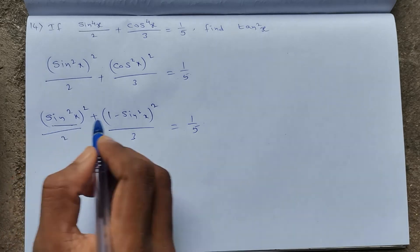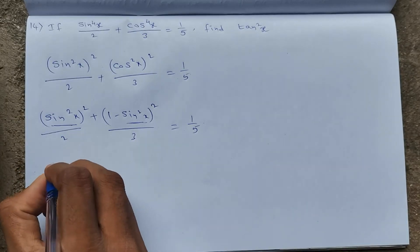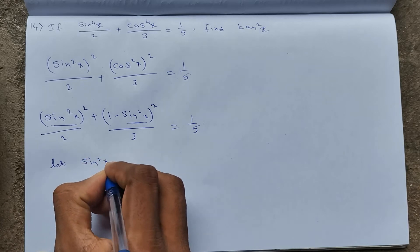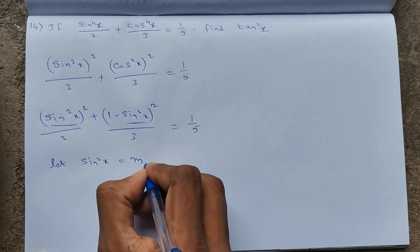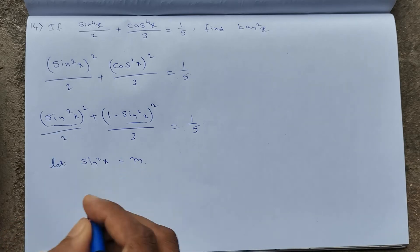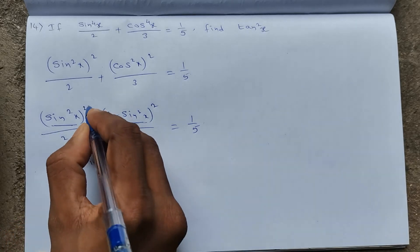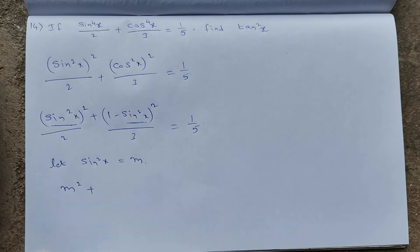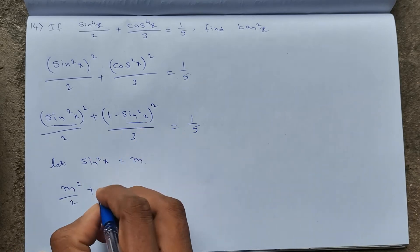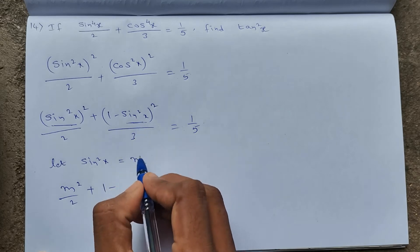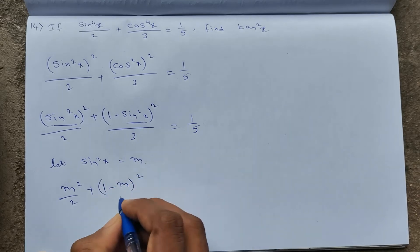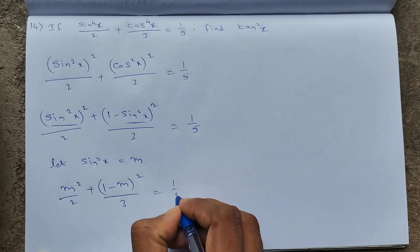Let sin²x = M. Then M²/2 + (1 − M)²/3 = 1/5.